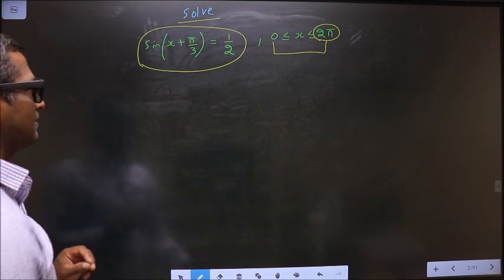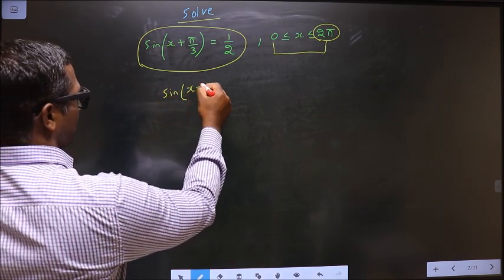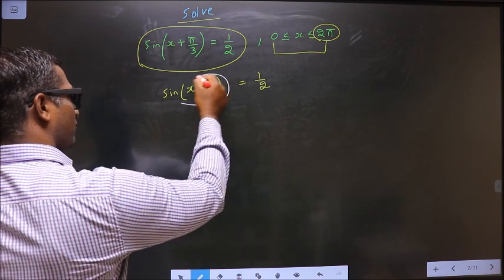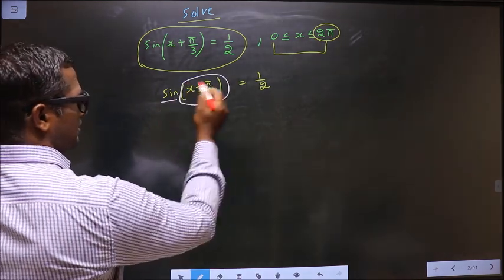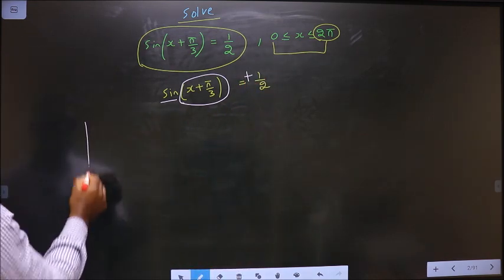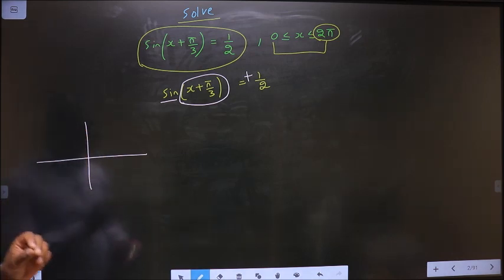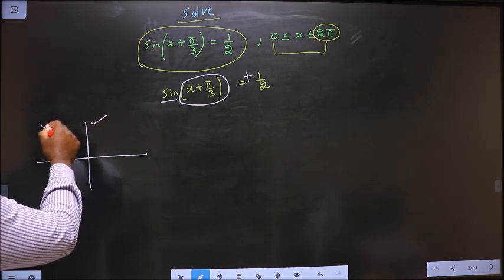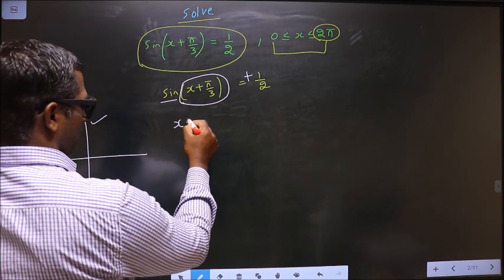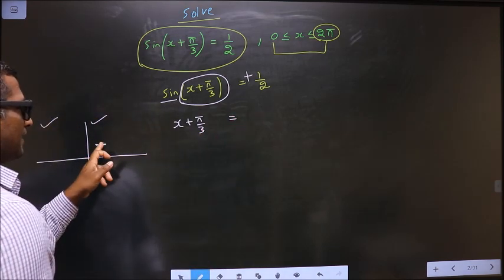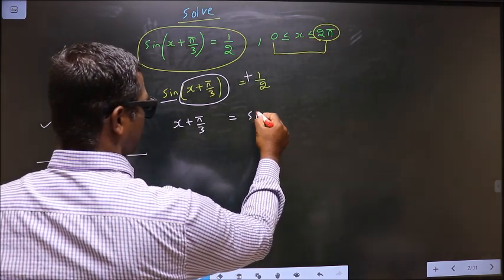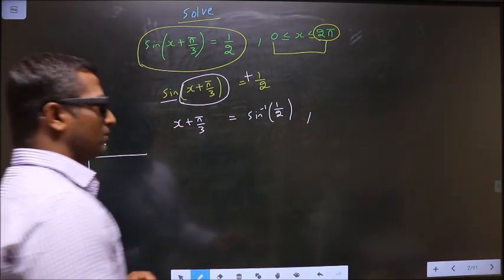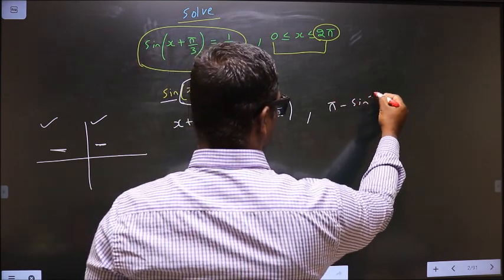The given equation is sin(x + π/3) = 1/2. To get the values for x + π/3, note that here it is sin and here it is positive. So check in what quadrants sin is positive — it is in the first and second quadrants (ASTC rule). So x + π/3 equals sin⁻¹(1/2) for an angle in the first quadrant, or π minus sin⁻¹(1/2) for an angle in the second quadrant.